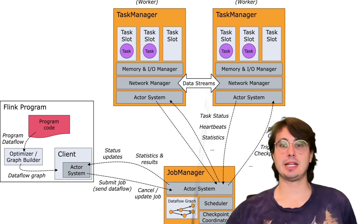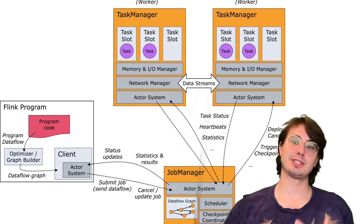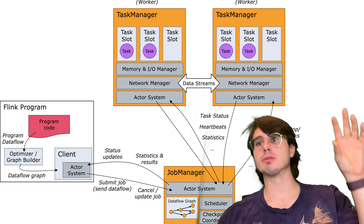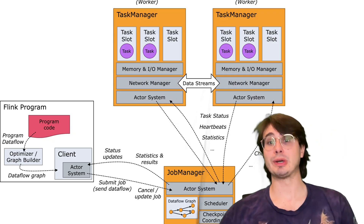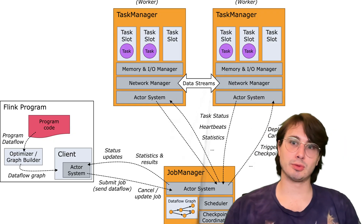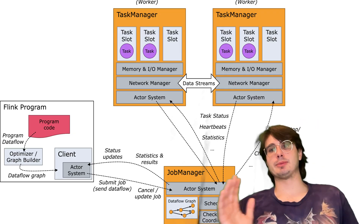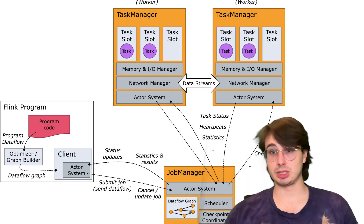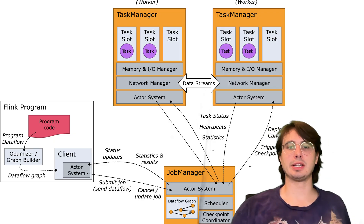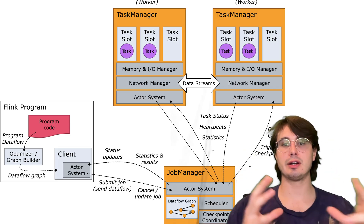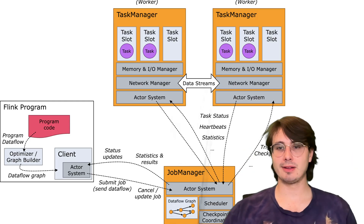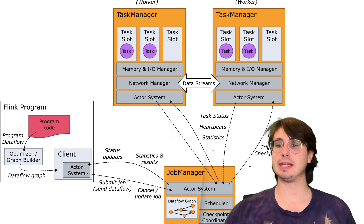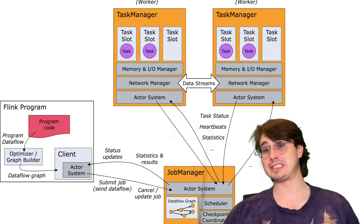Task slot configuration determines how many parallel tasks run on each task manager. Set it too high and you'll have resource contention and degraded performance; too low and you waste resources. For CPU-intensive workloads, align task slots with available CPU cores — two cores, two slots. For I/O-intensive workloads, you can often run more slots than cores. Monitor and adjust memory allocation and parallelism based on whether your jobs are over- or under-consuming resources, because there's no one-size-fits-all approach.